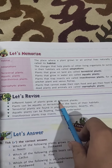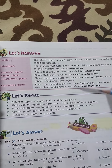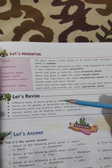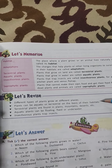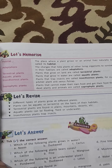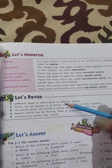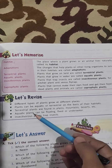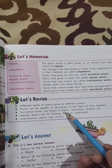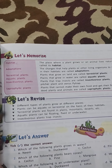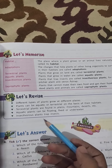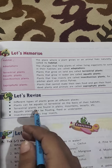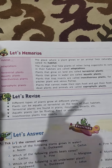Different types of plants grow at different places. Plants can be aquatic or terrestrial based on their habitat. Terrestrial plants are found in plains, mountains, and deserts. Aquatic plants are of three types: floating, fixed, and underwater. Insectivorous plants trap insects. Now let's come back to the exercise. Let's do this.